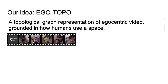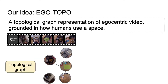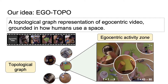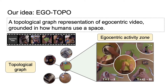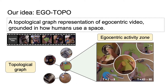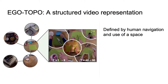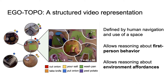Our idea is to build a topological graph of the environment that captures how people use it. We reorganize ego video frames into a set of activity zones and the rough spatial layout. Each zone represents a location in the environment where a coherent set of interactions can be done. The zone catalogues all the times the camera wearer visits it and all the interactions performed there. Our grounded video representation allows us to better reason about the agent — who may take a commonly traversed path to the sink after picking something up at the fridge — or to reason about environment affordances to plan out what interactions are possible at what zones.